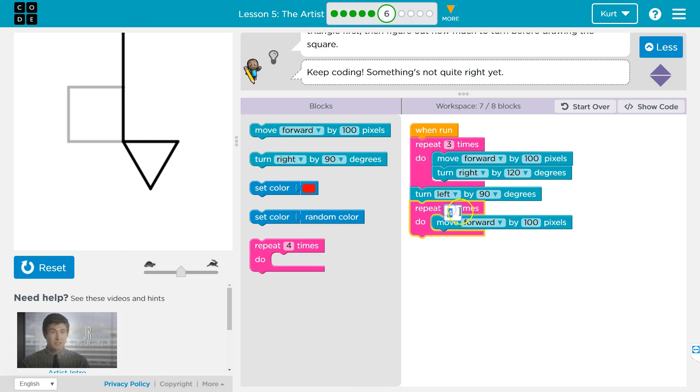Well, I do want this to run four times because the square has four sides. And I need now to turn to make each side. So I'm going to grab my turn block and drop it in.